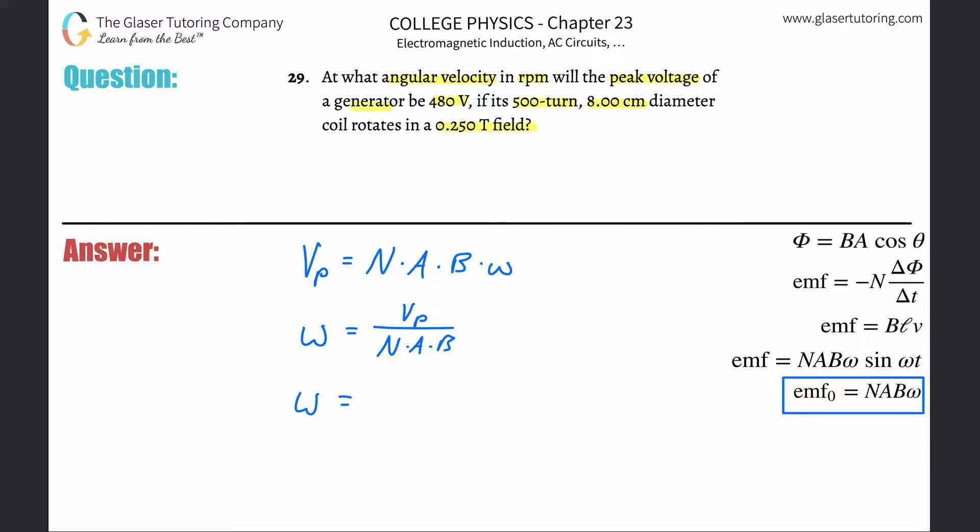And it looks like we basically know everything. Well, we know everything in terms of the information in this problem. So this is going to be 480 volts on the top. The number of turns at the bottom is going to be 500 turns, they told you.